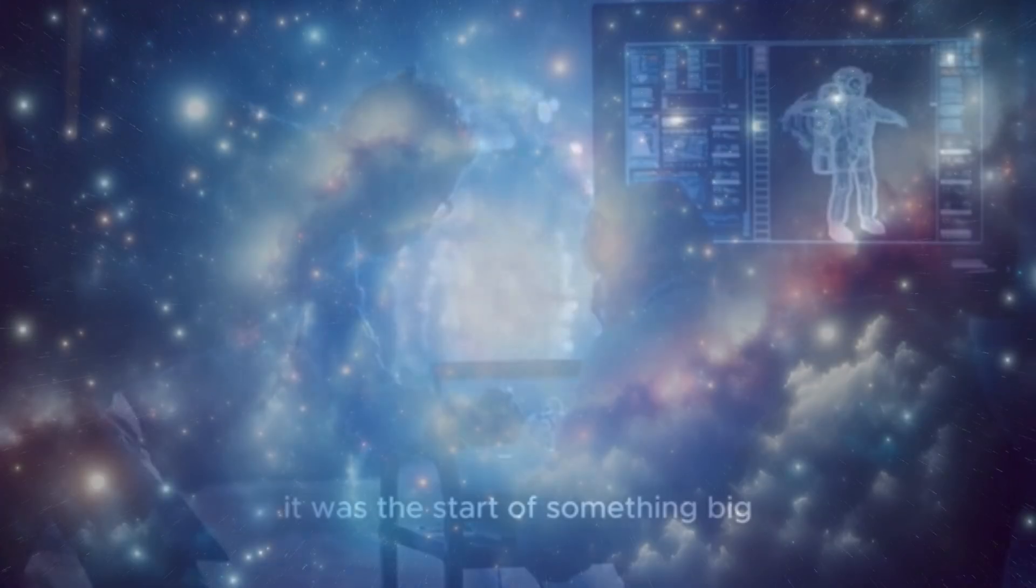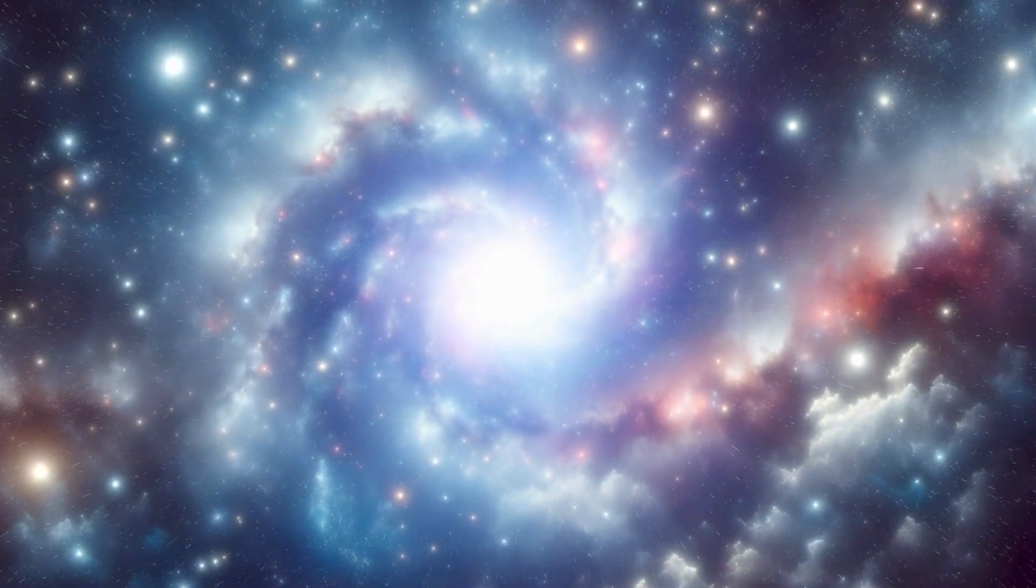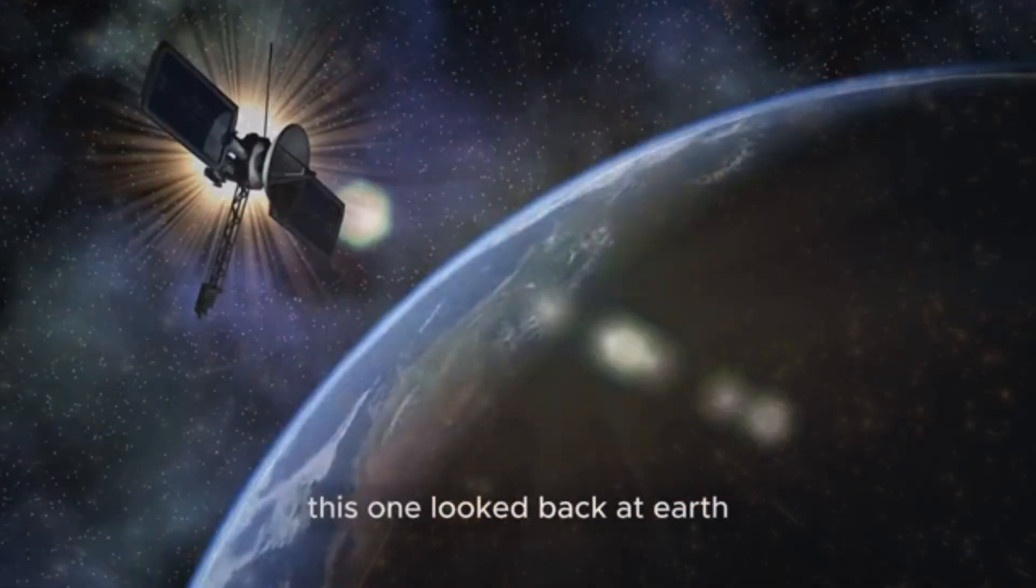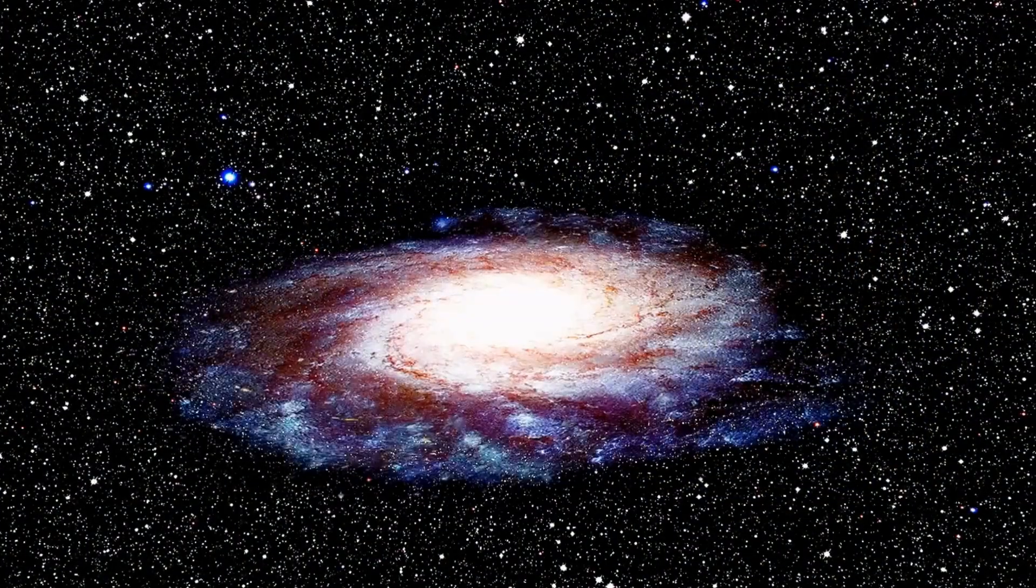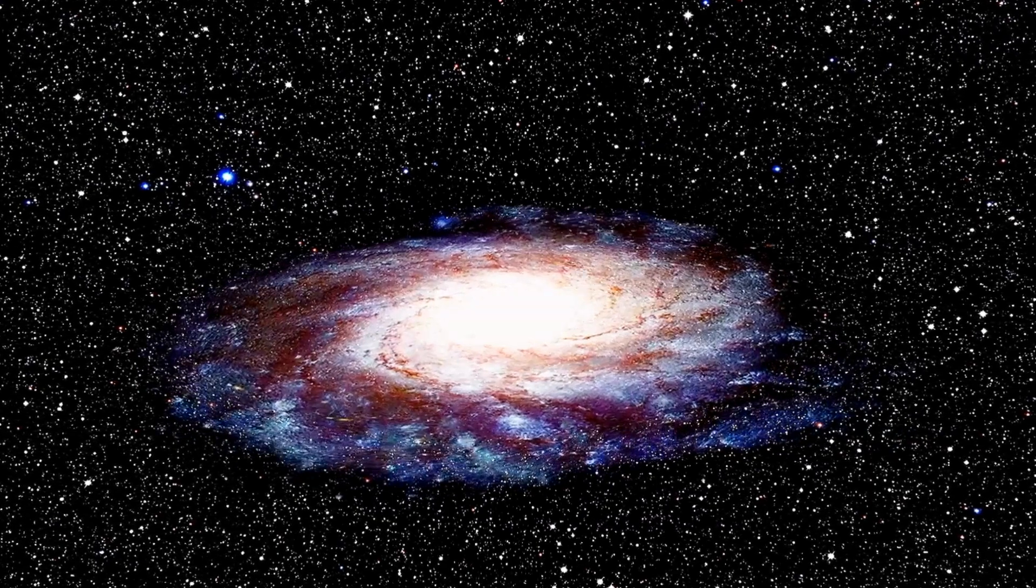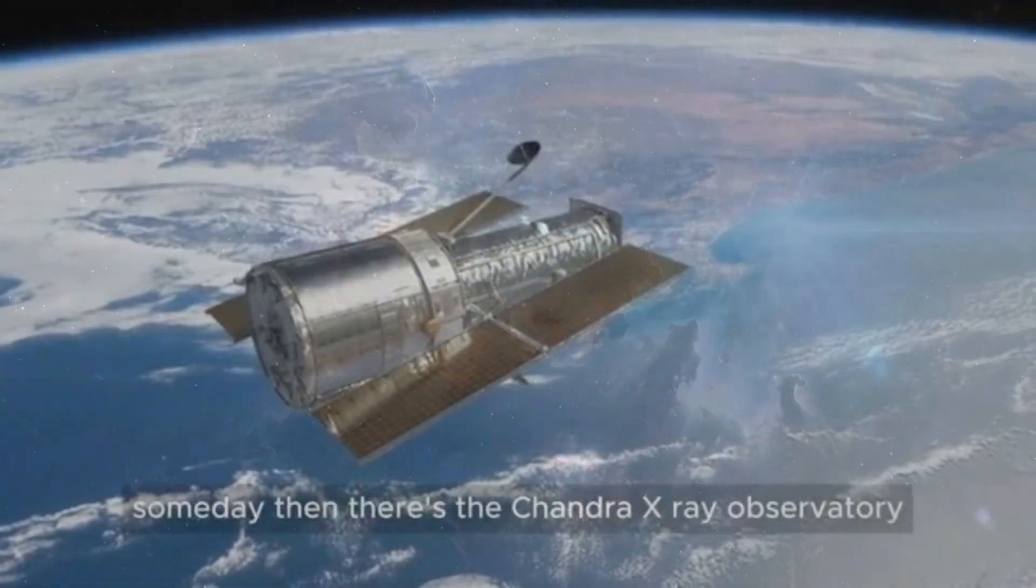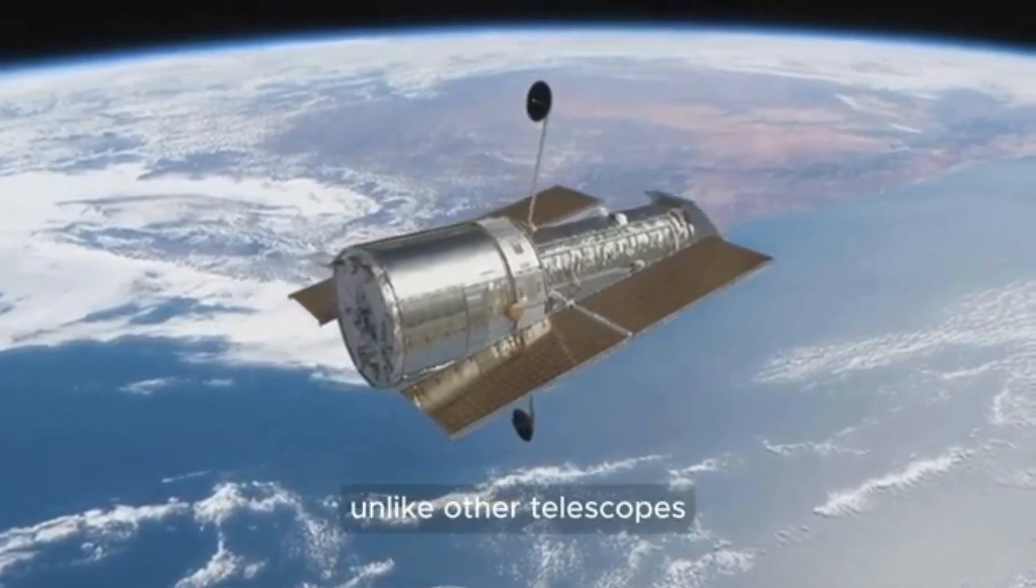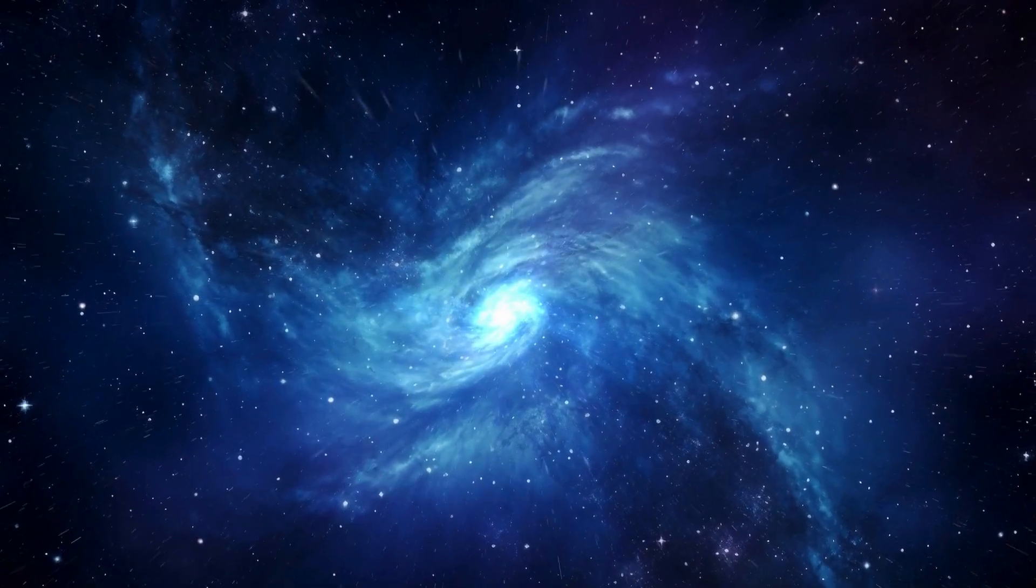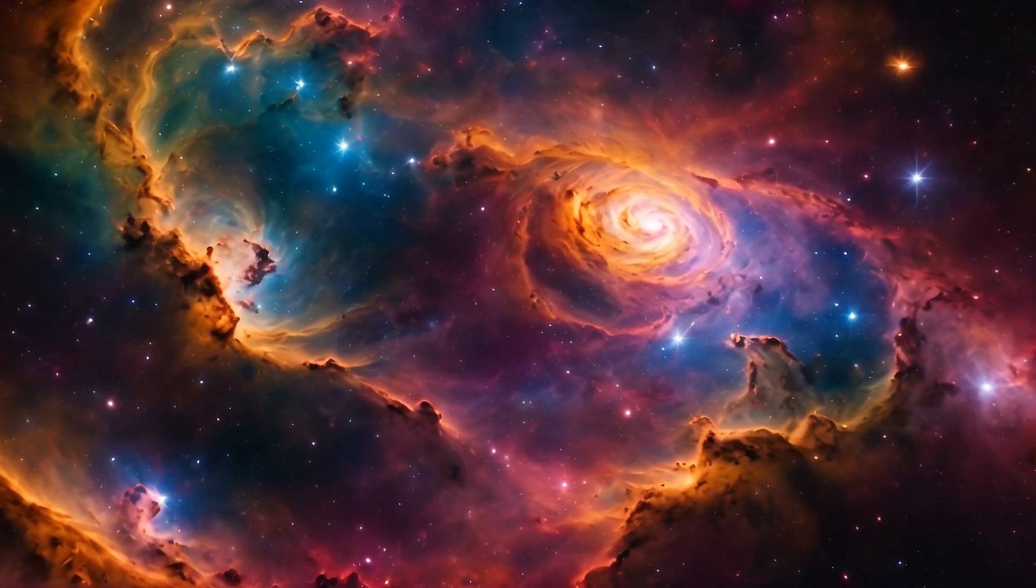A machine that defies time. Voyager 1 was never meant to last this long. Built with 1970s technology, its systems should have failed years ago. And yet, it still functions. It has traveled more than 14 billion miles, pushing the boundaries of human knowledge, yet it continues to send data, whispers from the edge of existence. Every signal it sends back is a clue, a clue that space is far stranger and far more alive than we ever imagined.